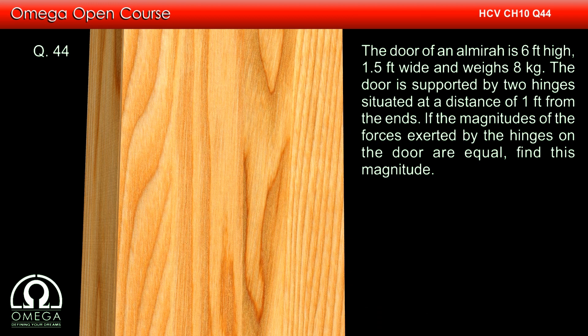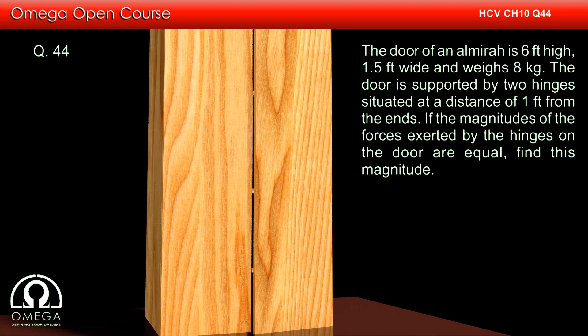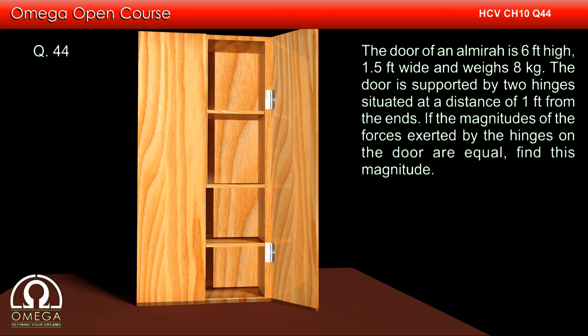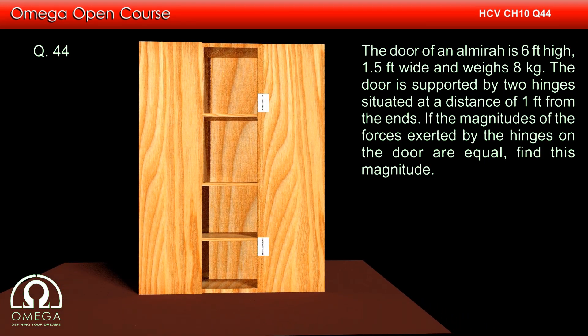The door of an almira is 6 feet high, 1.5 feet wide and weighs 8 kg. The door is supported by 2 hinges situated at a distance of 1 foot from the ends. If the magnitude of the forces exerted by the hinges on the door are equal, find this magnitude.